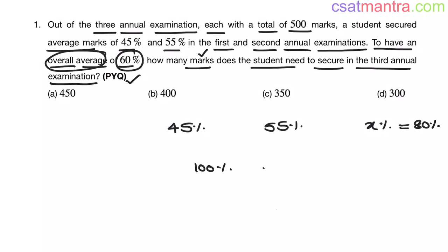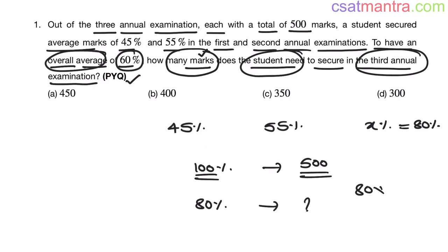100% is 500 marks. We need to find how many marks the student needs to secure. So if 100% is 500 marks, then 80% is how much? 80 times 500 divided by 100. The zeros cancel out, so 80 times 5 equals 400. So our answer is B, my friends.